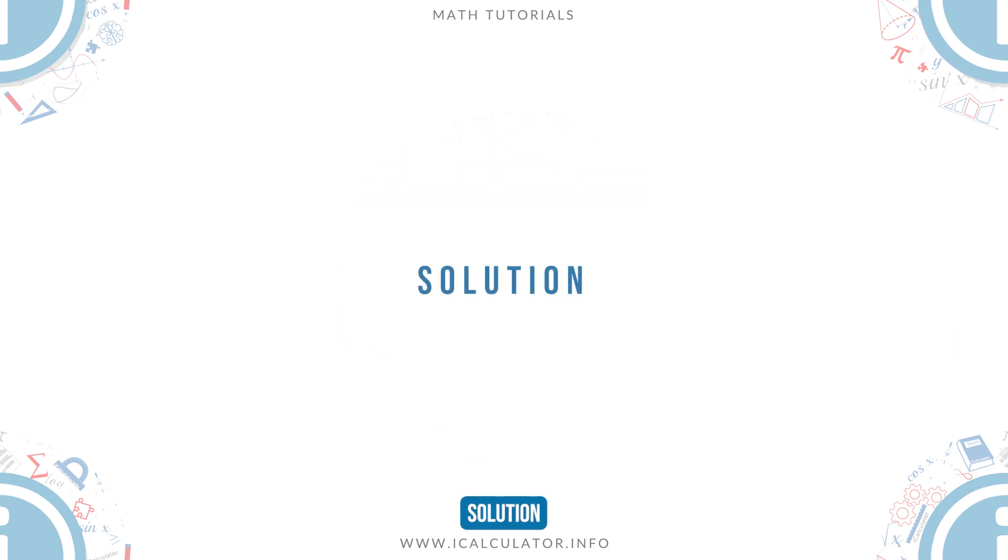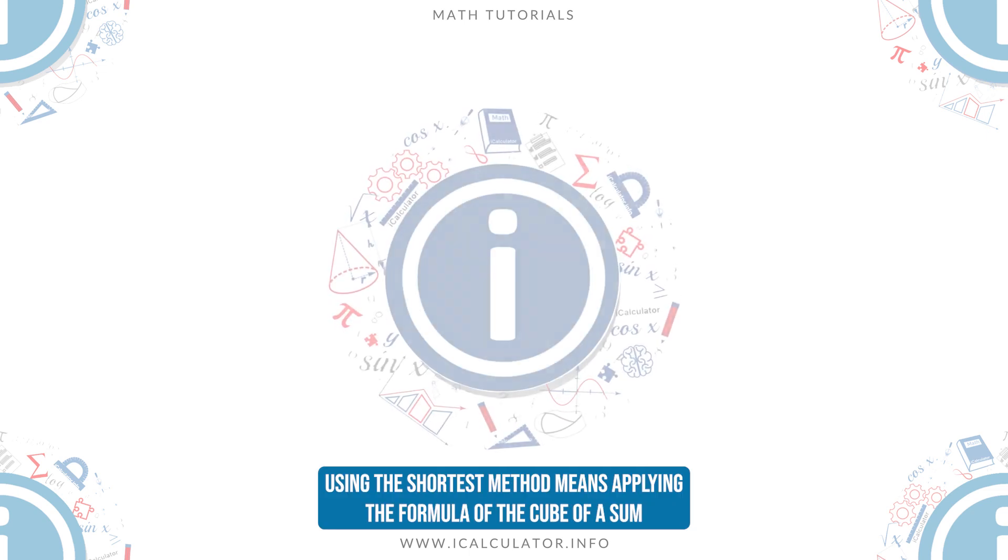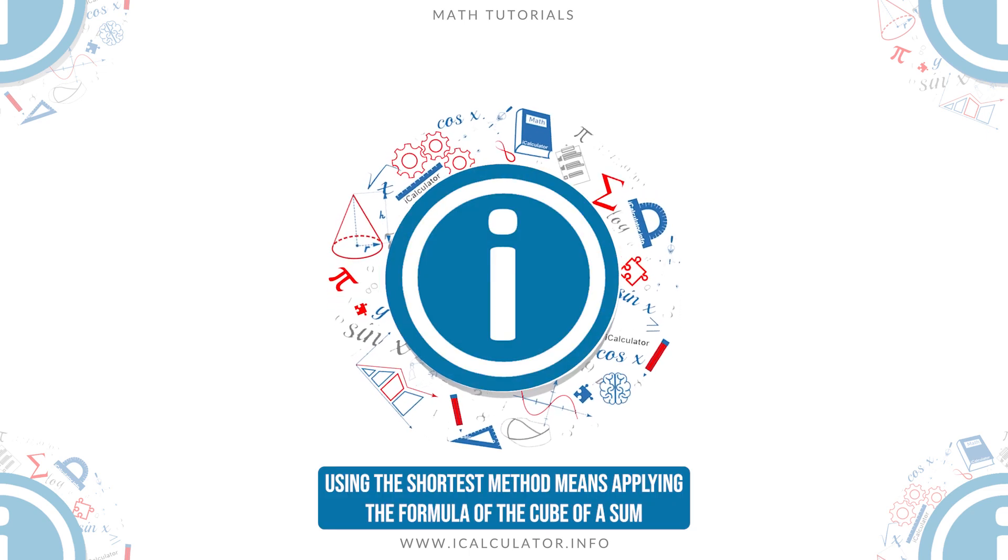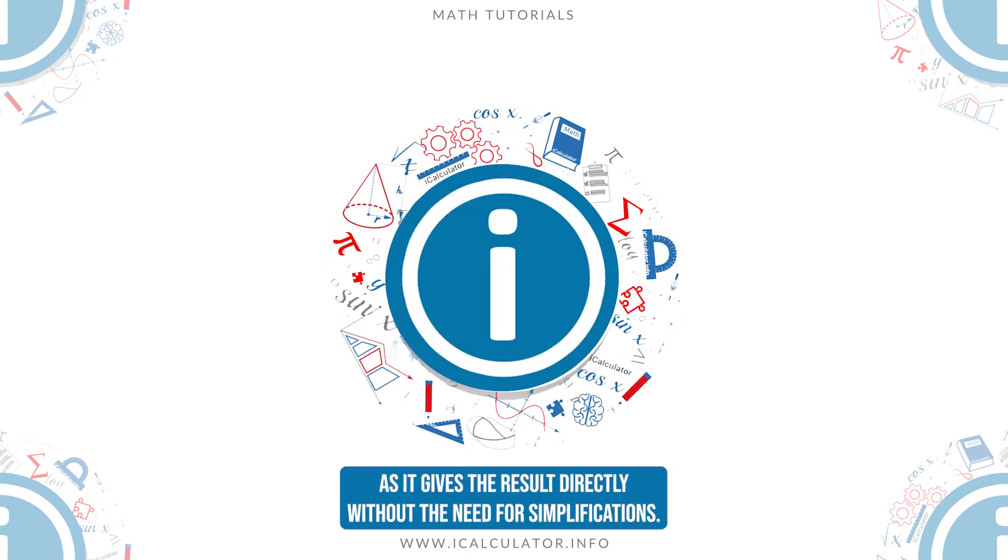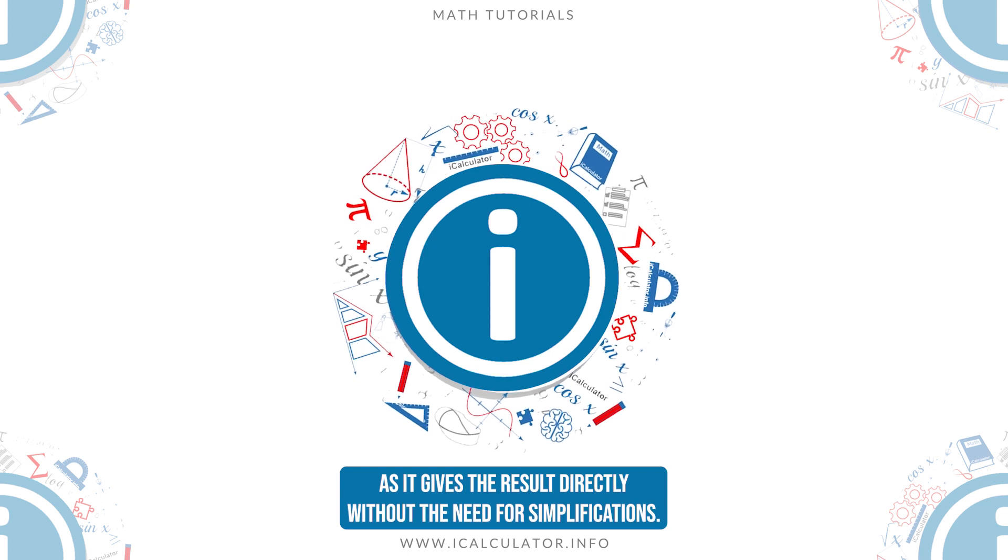Solution: Using the shortest method means applying the formula of the cube of a sum, as it gives the result directly without the need for simplifications.